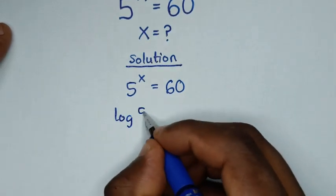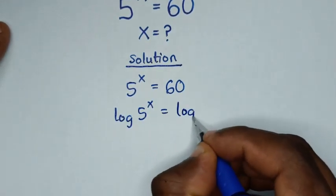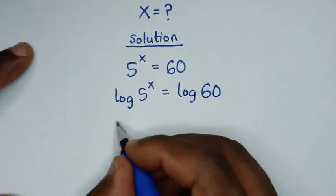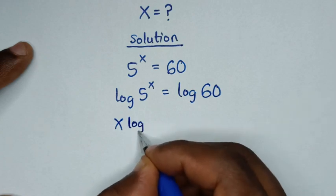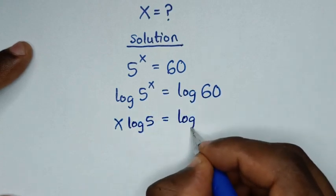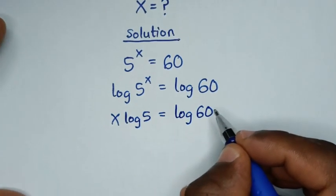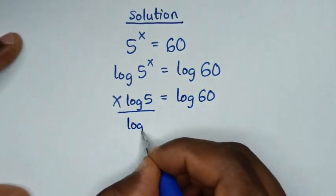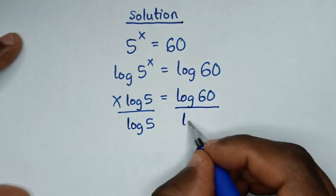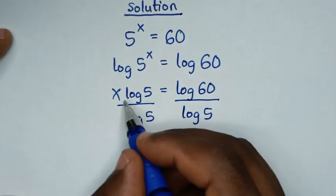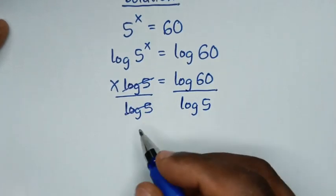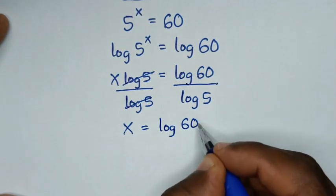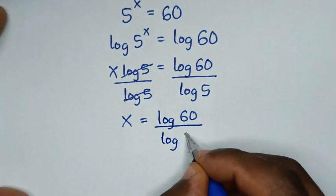So it will be log of 5 power of x is equal to log of 60. Then this power of x will move to the base, so it will be x log of 5 is equal to log of 60. Then we'll divide by log of 5 on both sides, so this and this will cancel, giving x is equal to log of 60 over log of 5.